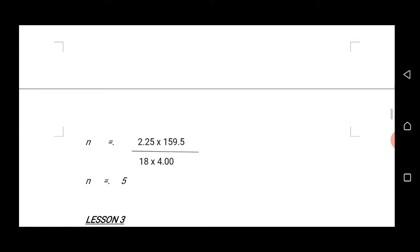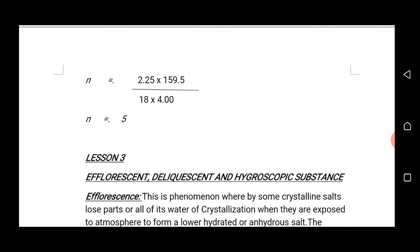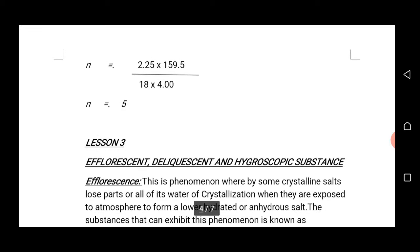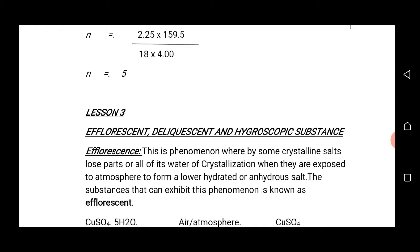Substituting into the formula, we get the value of N — the number of moles of water of crystallization — to be 5. Normally the raw calculation gives approximately 4.9, but since the number of moles of water of crystallization must be a whole number, we round to 5.